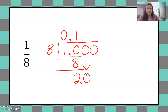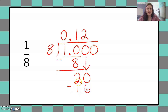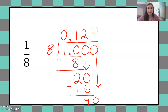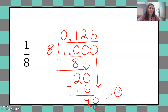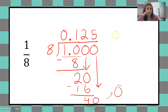10 minus eight is two. Bring down the zero. Eight goes into 20 two times. Two times eight is 16. 20 minus 16 is four. Bring down the last zero. Eight goes evenly into 40 five times, because eight times five is 40. So I subtract 40 and have nothing left at the end. So one eighth is equal to the decimal 0.125.